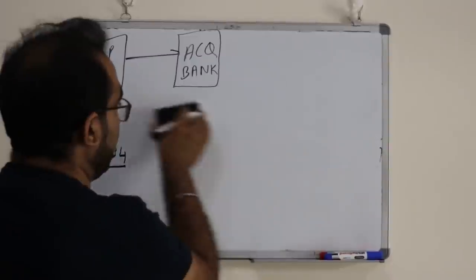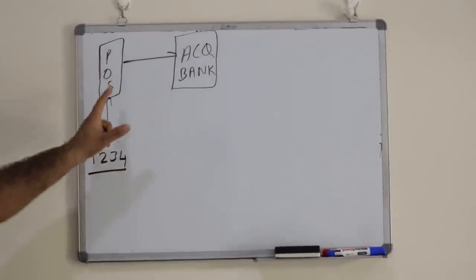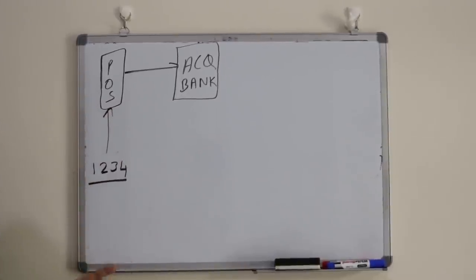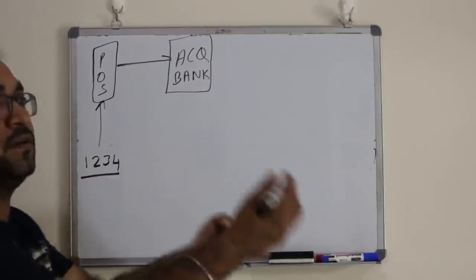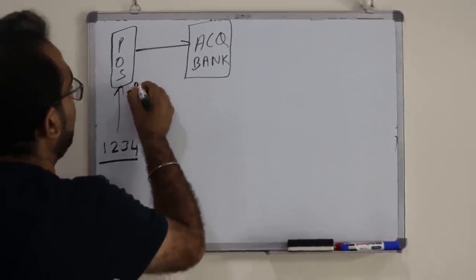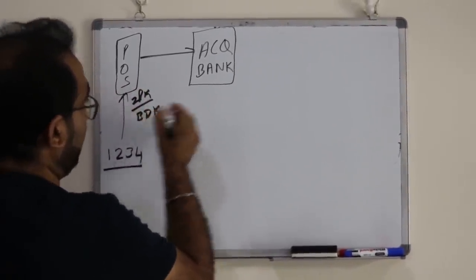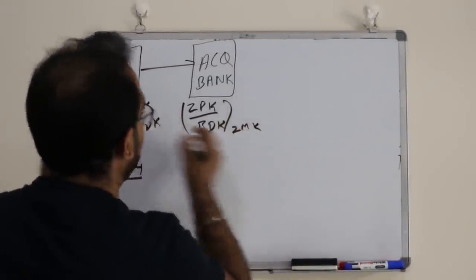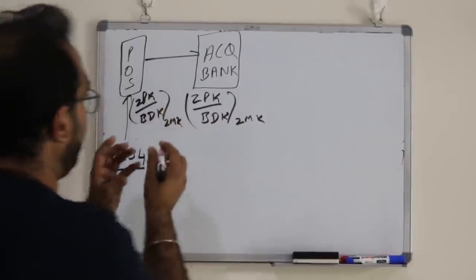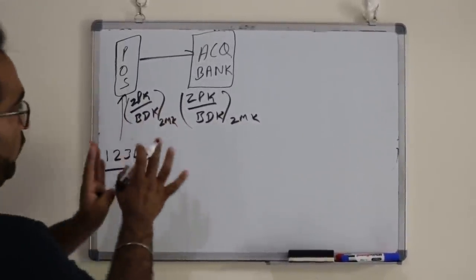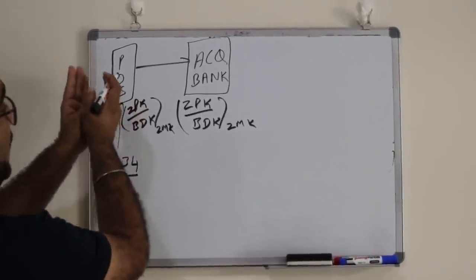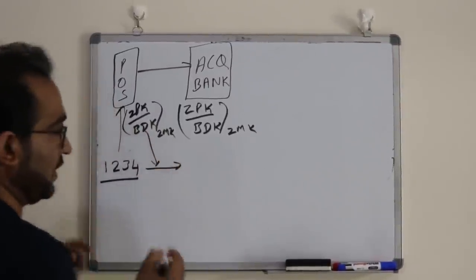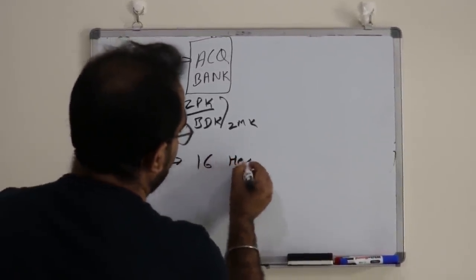It could be possible that between this POS terminal and the acquiring bank they might be using ZPK or they might be using DUKPT. In this session we will not go into the detail of BDK and ZPK, but we will understand how the PIN is translated. When you enter 1-2-3-4, the POS application will use an algorithm to translate this PIN to some other value, using either the ZPK or BDK — the same key exchanged between these two under the ZMK, which is the Zonal Master Key.